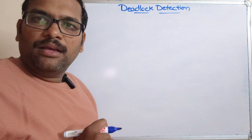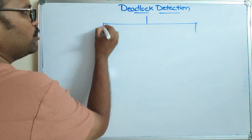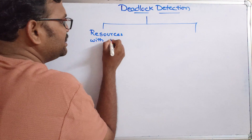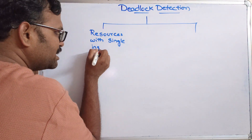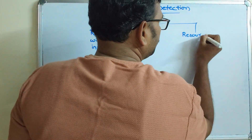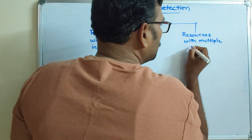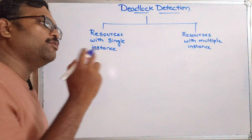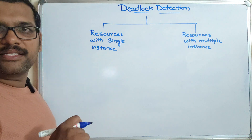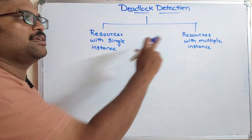Deadlock detection can be done with two approaches, based on two scenarios. The first scenario is resources with a single instance, and the second one is resources with multiple instances. This is the same distinction we discussed in deadlock avoidance as well.